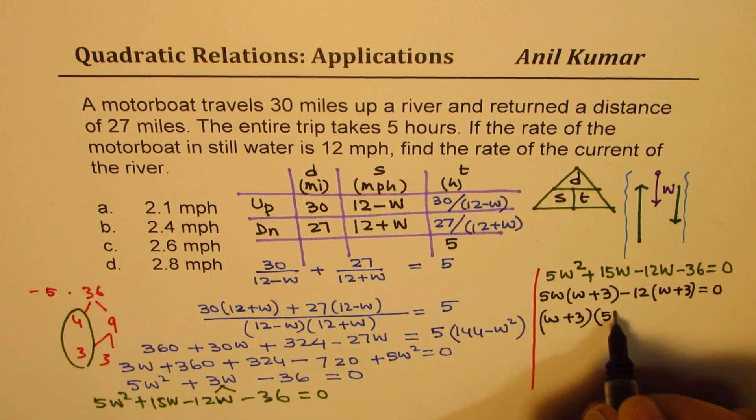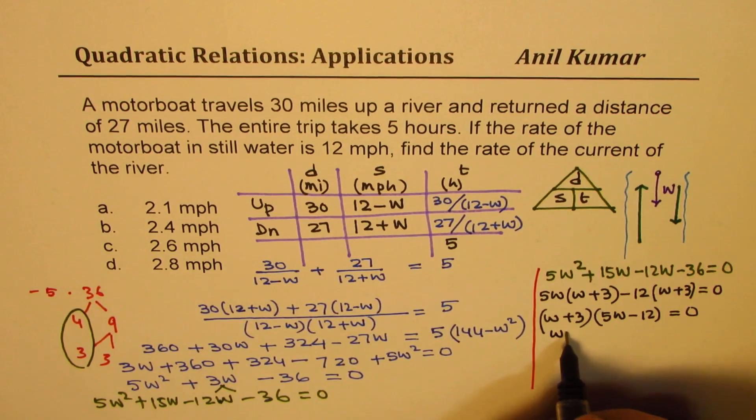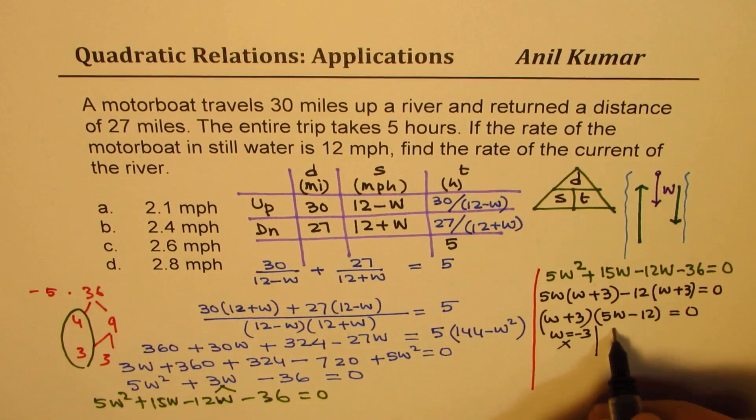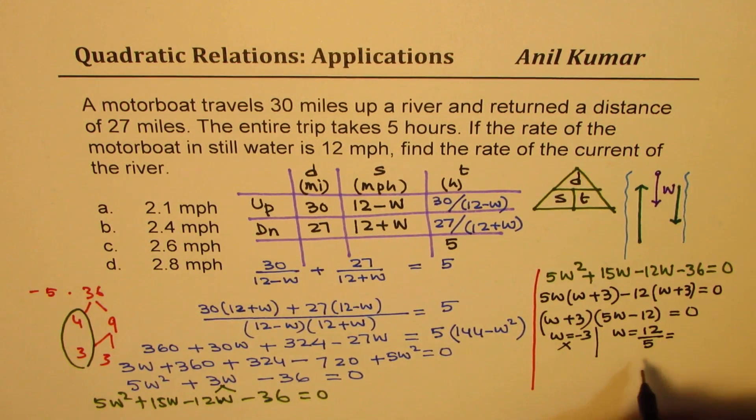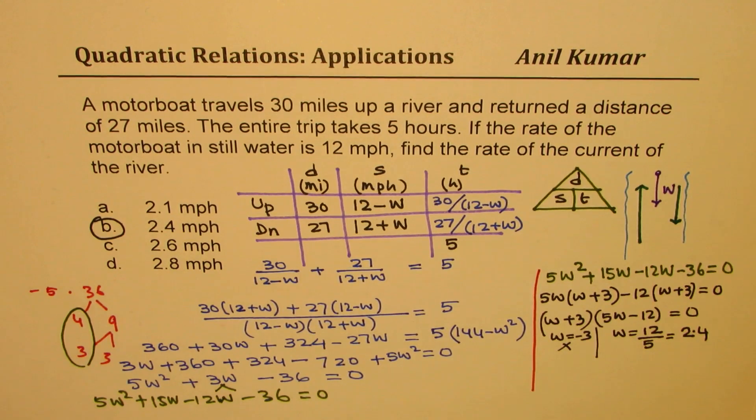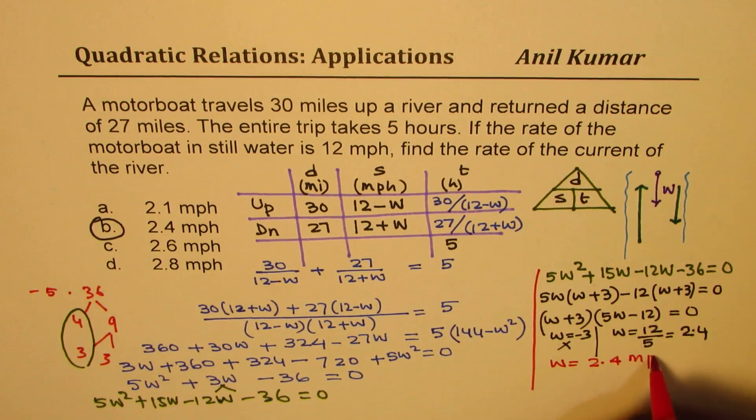So we have w equals to minus 3, which is incorrect. It cannot be negative, and we have w equals to 12 divided by 5. So 5 times 2 is 10, 20 means 2.4. So 2.4 is option B for us. So that is the correct answer. So we get the speed of the current is 2.4 miles per hour.